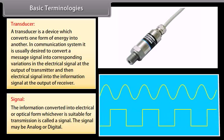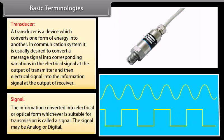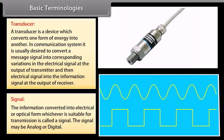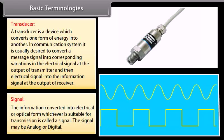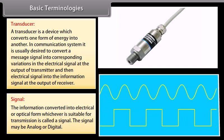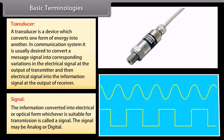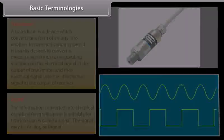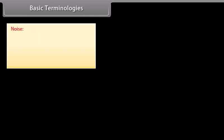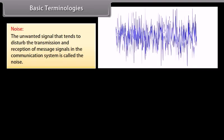The information converted into electrical or optical form, whichever is suitable for transmission, is called a signal. The signal may be analog or digital. The unwanted signal that tends to disturb the transmission and reception of message signals in the communication system is called noise.